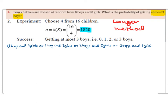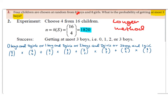We're only focusing on the success: getting at most three boys, which means zero boys, one, two, or three boys. In words: zero boys and four girls, or one boy and three girls, or two boys and two girls, or three boys and one girl. So: 8 choose 0 times 8 choose 4, plus 8 choose 1 times 8 choose 3, plus 8 choose 2 times 8 choose 2, plus 8 choose 3 times 8 choose 1.